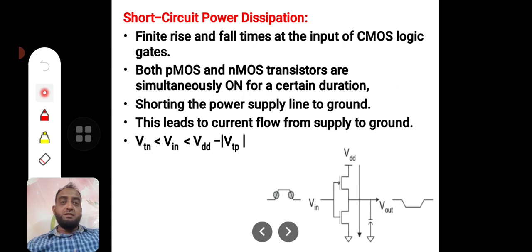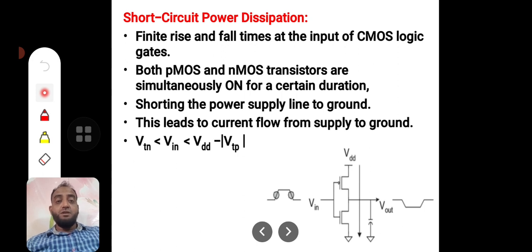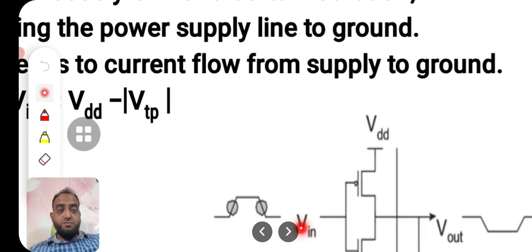Shorting the power supply to ground may cause large power consumption, and sometimes it may even damage the device if it happens for a longer time. This short circuit power dissipation leads to a current flow from the supply to ground during the transition time.